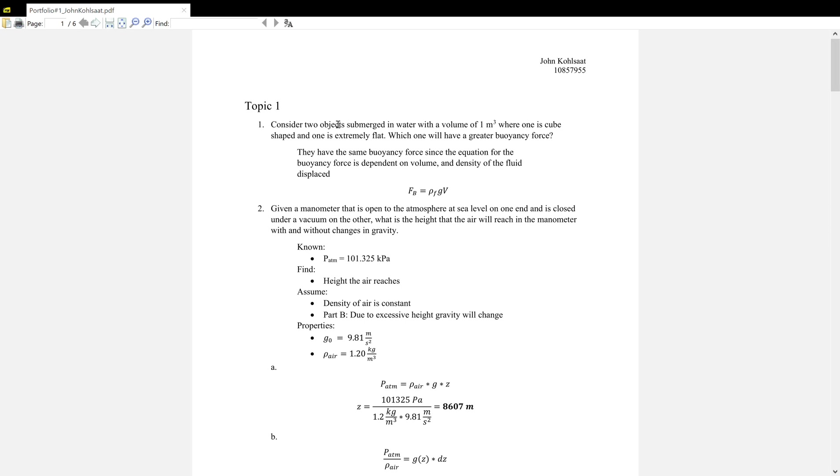All right, so for question number one, or topic number one question, we have: consider two objects submerged in water with a volume of one meter cubed, where one is cube-shaped and one is extremely flat. Which one will have the greater buoyancy force? So this is kind of a trick question based on math and the pressure of how pressure acts on an object.